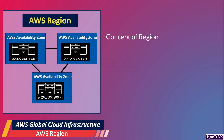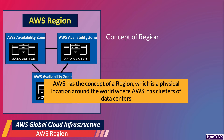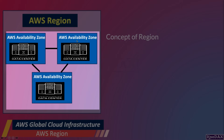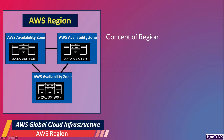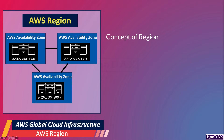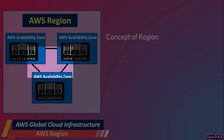What is an AWS region? AWS has the concept of a region, which is a physical location around the world where AWS has clusters of data centers. As you can see in this diagram, this AWS region has three clusters of data centers — one cluster here, the second here, and the third here. These clusters of data centers are interconnected to one another.